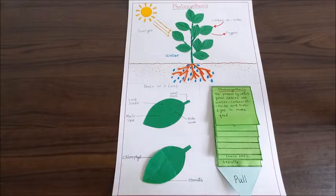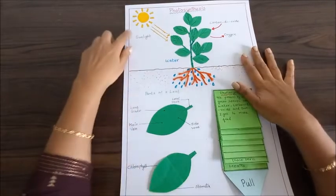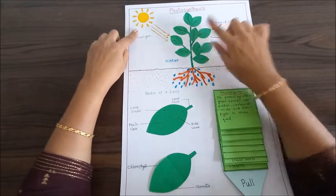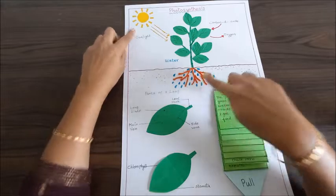Hello everyone, welcome back to the channel. Today's TLM concept is photosynthesis. Let's start. Here, as you can see, there is sunlight and a plant which has leaves, and you can see the roots here.